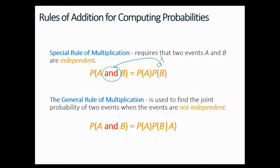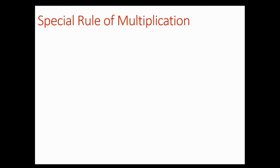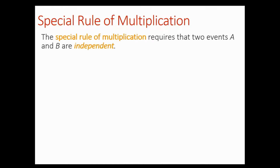The second rule is the general rule of multiplication, and is used to find the joint probability of two events when the events are not independent. The fact that one event occurs affects the second event. This is calculated by: the probability of A and B is equal to the probability of A times the probability of B given A — that little line here is translated into saying 'given that A has happened already.' So because event A happened first, that has affected the second event.